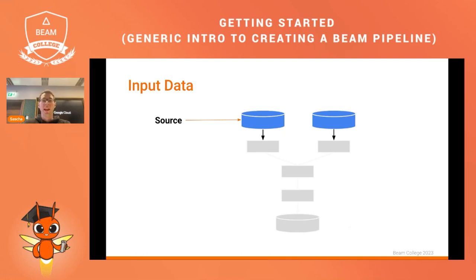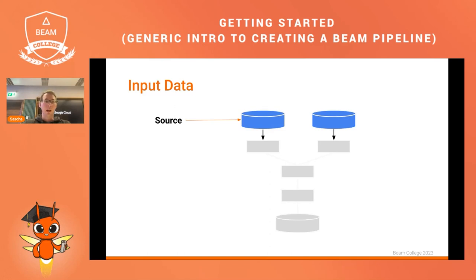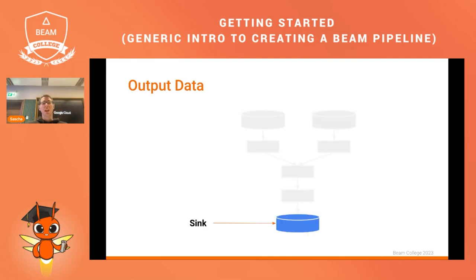When it comes to reading data we talk about sources in Beam pipelines. They are used to read data from external data sources such as files, databases, or streaming services. There are a number of built-in data sources, but you can also define your own. In a pipeline, you have to create a reader which is responsible for reading the data from the source and producing the elements that are then processed in the pipeline. On the output side we talk about sinks, which are used to write data from a Beam pipeline to an external destination.